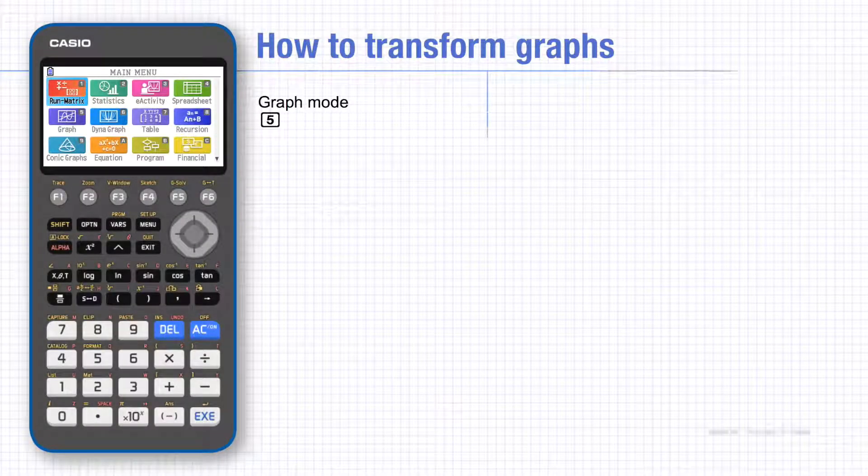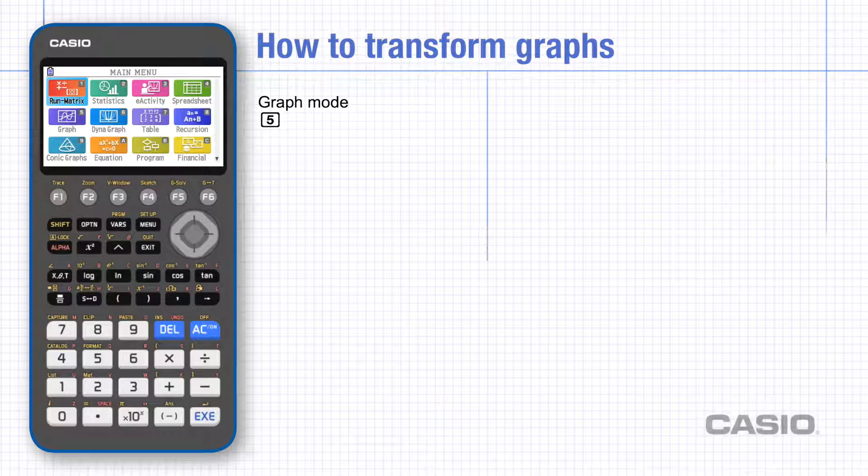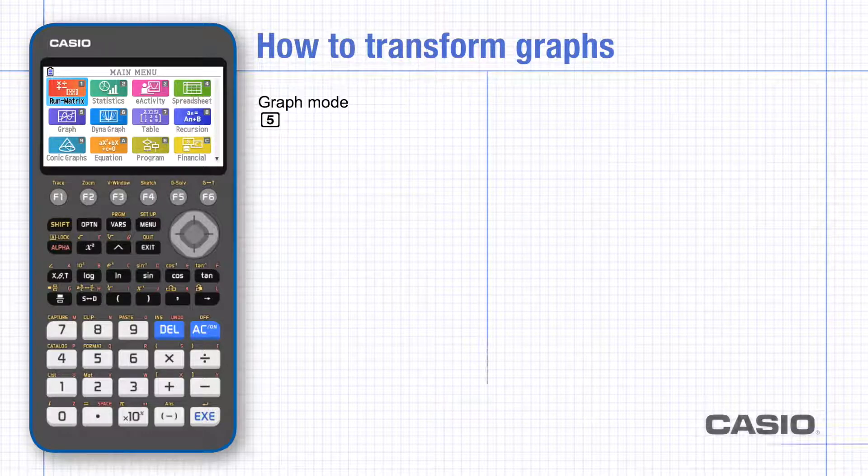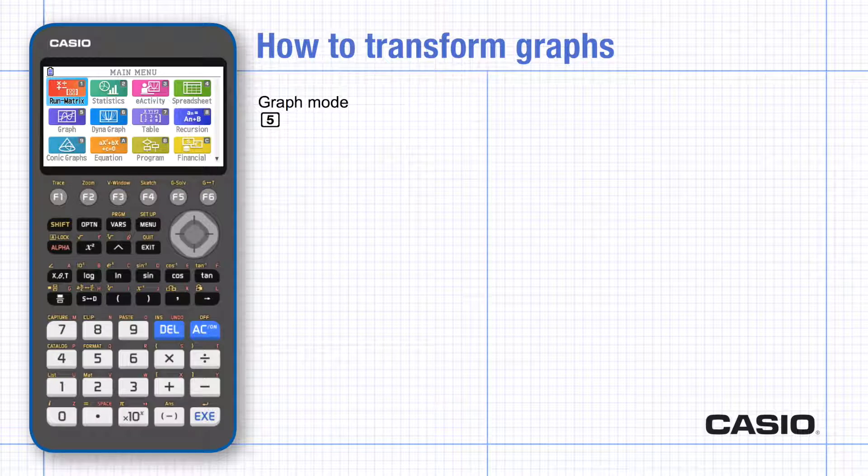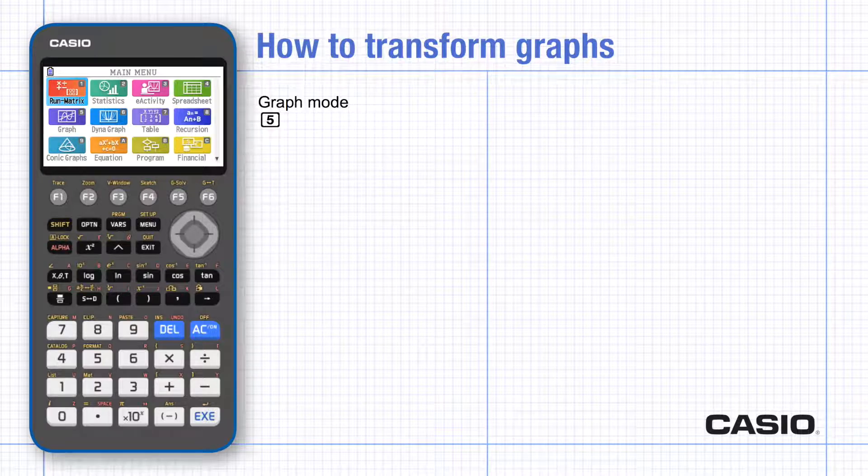In this tutorial we're looking at how to use modify in graph mode to explore transformation of graphs. The graph I'm using will be y equals cos x.